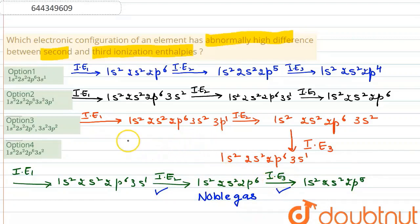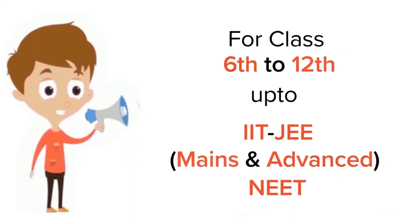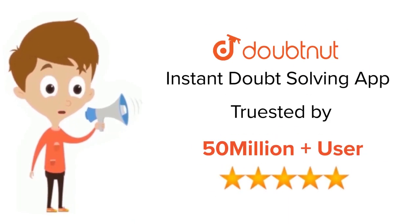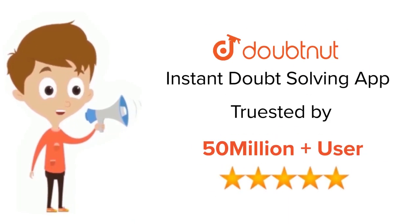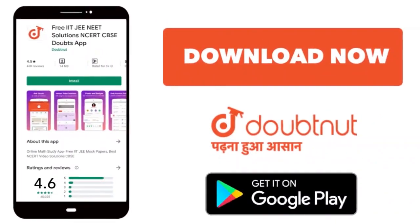So the correct answer is option number 4. For class 6–12, IIT JEE, and NEET level, trusted by more than 5 crore students — download the DoubtNet app today.